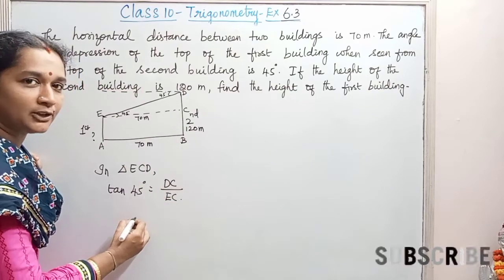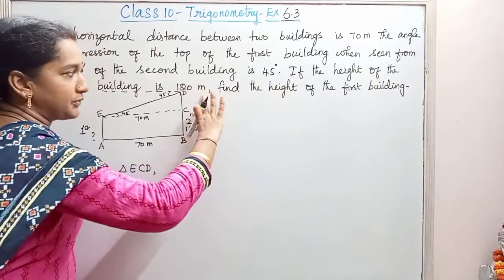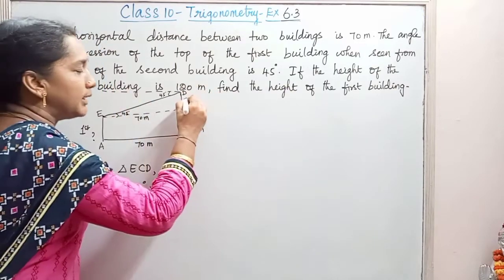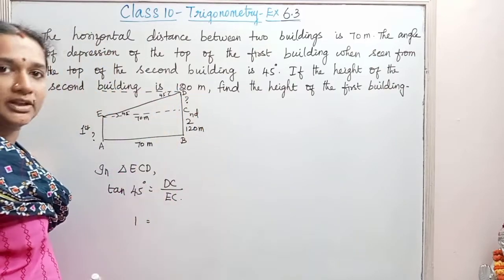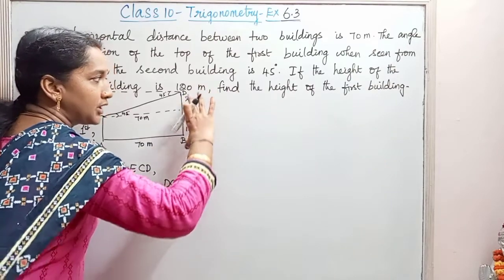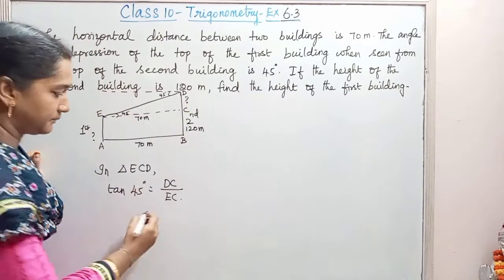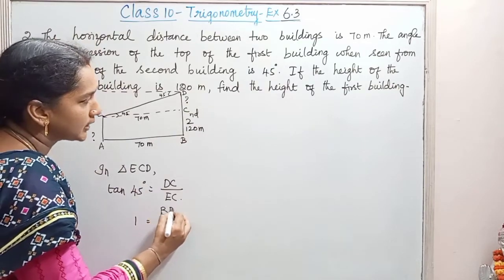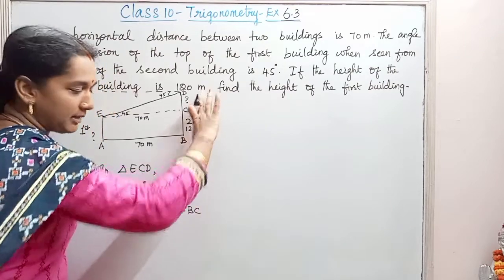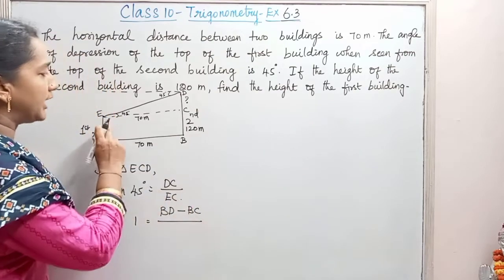So the value of tan 45 is 1. This equals DC divided by EC. Here, DC is derived from the full height of the second building. BD is 120 meters, but we need only the partial height CD. So CD equals BD minus BC, which gives us 120 minus BC, all divided by EC.